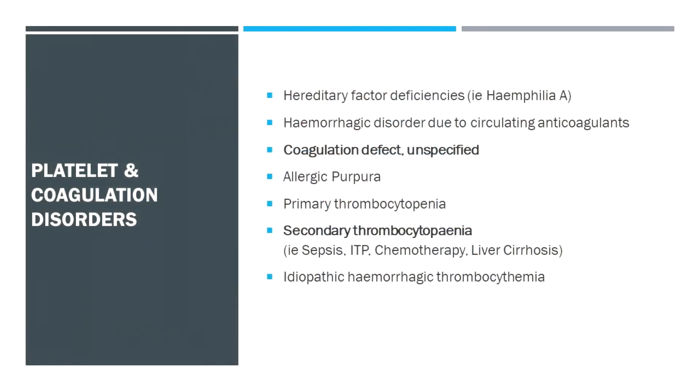There can be primary thrombocytopenia, though the more common causes are secondary. Think of things like septic thrombocytopenia, ITP — immune or idiopathic thrombocytopenia — which is uncommon but not hugely rare, chemotherapy and other agents like methotrexate causing bone marrow suppression resulting in thrombocytopenia as well as anaemia and neutropenia, and liver cirrhosis as a pretty common cause of chronic thrombocytopenia of varying severity. If there's a secondary cause, please write it — even if not yet confirmed, you can say this is likely.